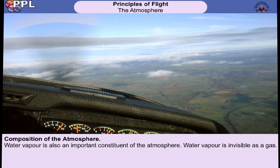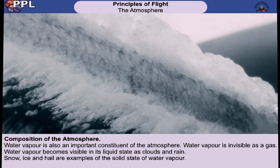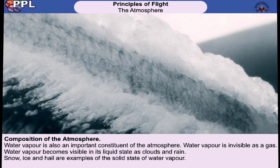There is one other gas found in our atmosphere which is important to the performance of an aircraft: water vapor. Although it's invisible as a gas, it can be seen in its liquid or solid state. Clouds and rain are examples of its liquid state, whereas snow, ice, and hail are examples of its solid state. The amount of water vapor present in the air is expressed as a percentage of the amount of water vapor compared with the amount needed to make the air saturated at its current temperature. This is known as relative humidity. 100 percent humidity would be visible as a cloud.